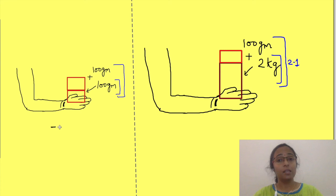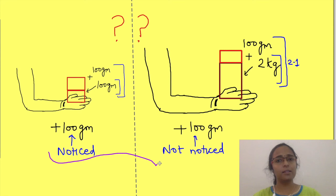Even though 100 grams weight has been added in both situations, you will notice or perceive the difference in the first scenario but not in the second scenario. How is that possible? Well, this is explained by Weber-Fechner law. From this example, you can state that the perception of change in stimulus intensity depends on the original strength of the stimulus.